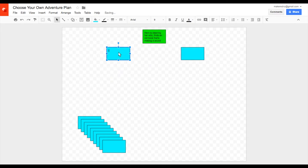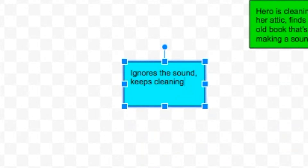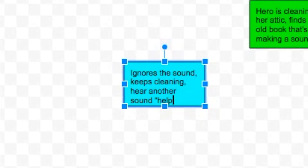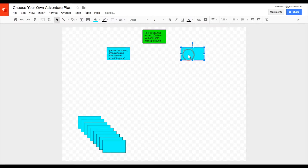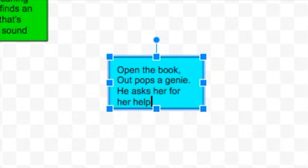I'm going to move all but a few of them out of the way, and I've got my first two choices. Inside this box is: she ignores the sound and keeps cleaning. Now we need to move the story along a little bit. After she ignores the sound, she's going to hear another sound that says "help me." Going back to the first choice, she can open the book, and out comes a genie who asks her for her help.